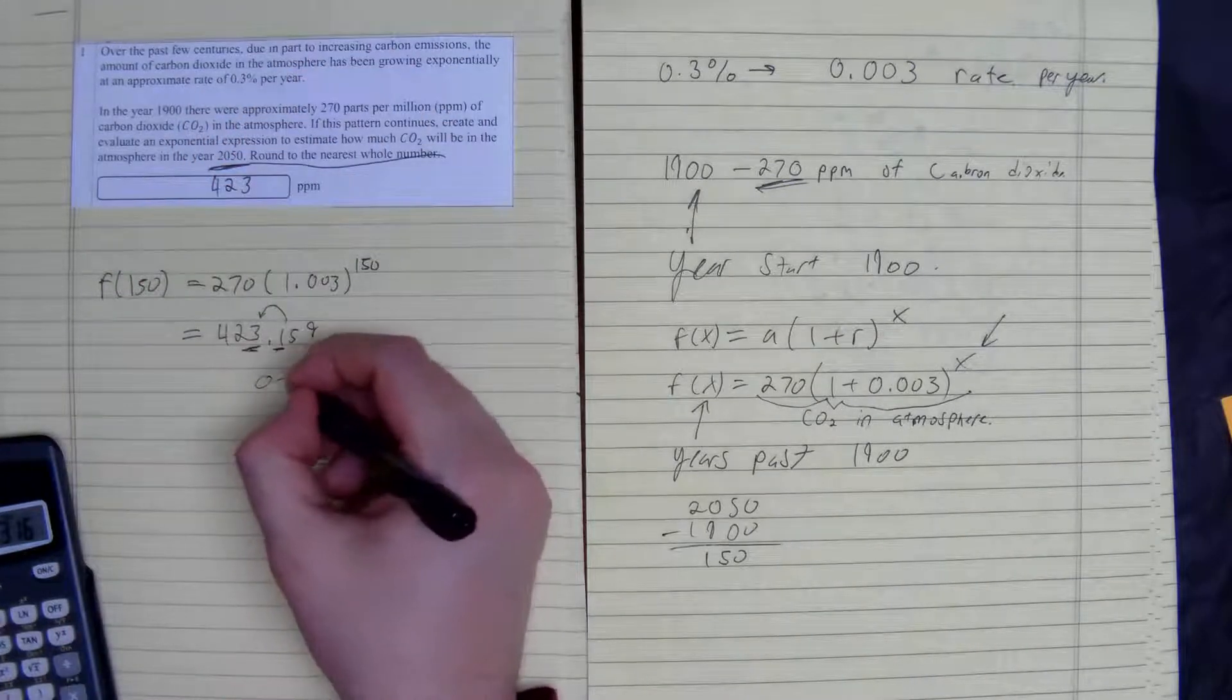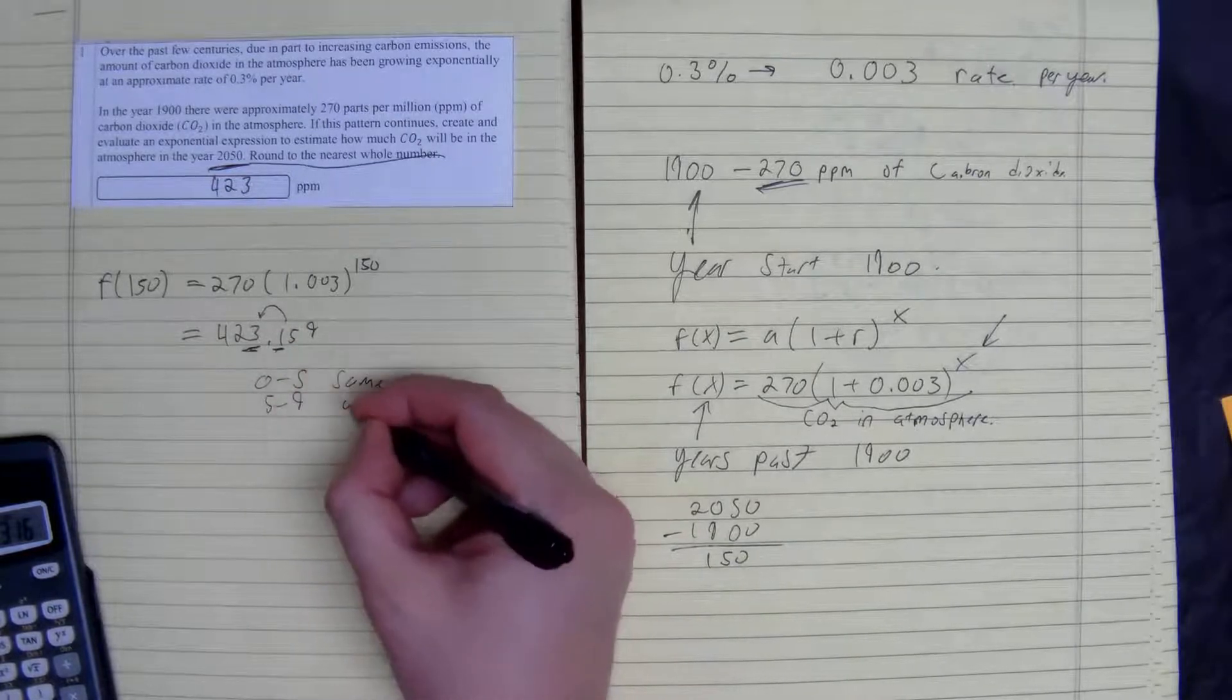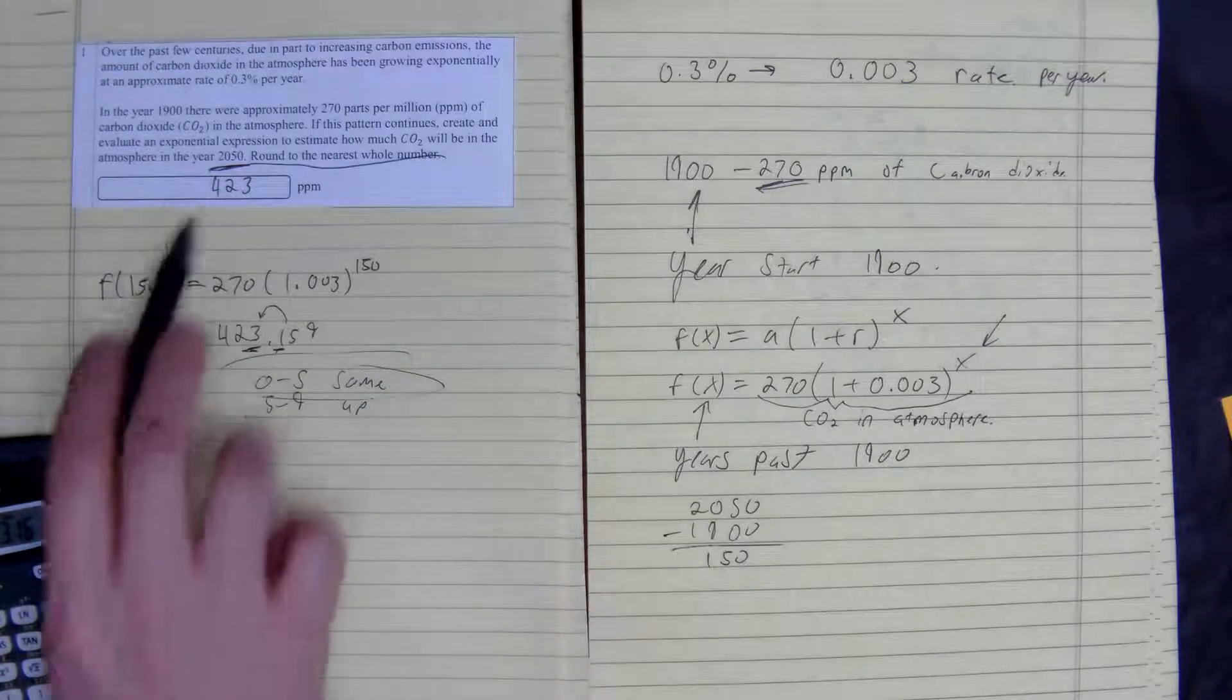Because remember, the rounding rules: 0 to 5 stays the same, 5 to 9 we round up. As you can see, this 1 is under the same category. So that's our answer, 423 parts per million.